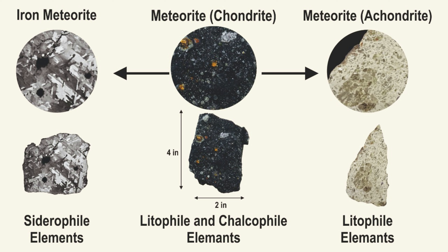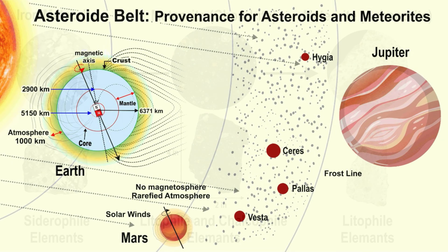Unlike the Earth, Mars and Vesta are dormant planetary bodies. Research reports gathered through space missions established that the matter inside Vesta continued to be molten in pockets of its mantle only for the first 30 million years of the solar system.